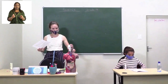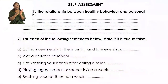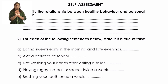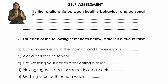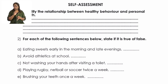Now we can turn to page 13 in our workbooks for the self-assessment. We have two questions. The first question is: identify the relationship between healthy behavior and personal health — remember to think about germs and what they do. Question two: for each of the following sentences, state if it is true or false, writing your answer in the space provided. The memorandum is also attached, but please try to do it on your own first.